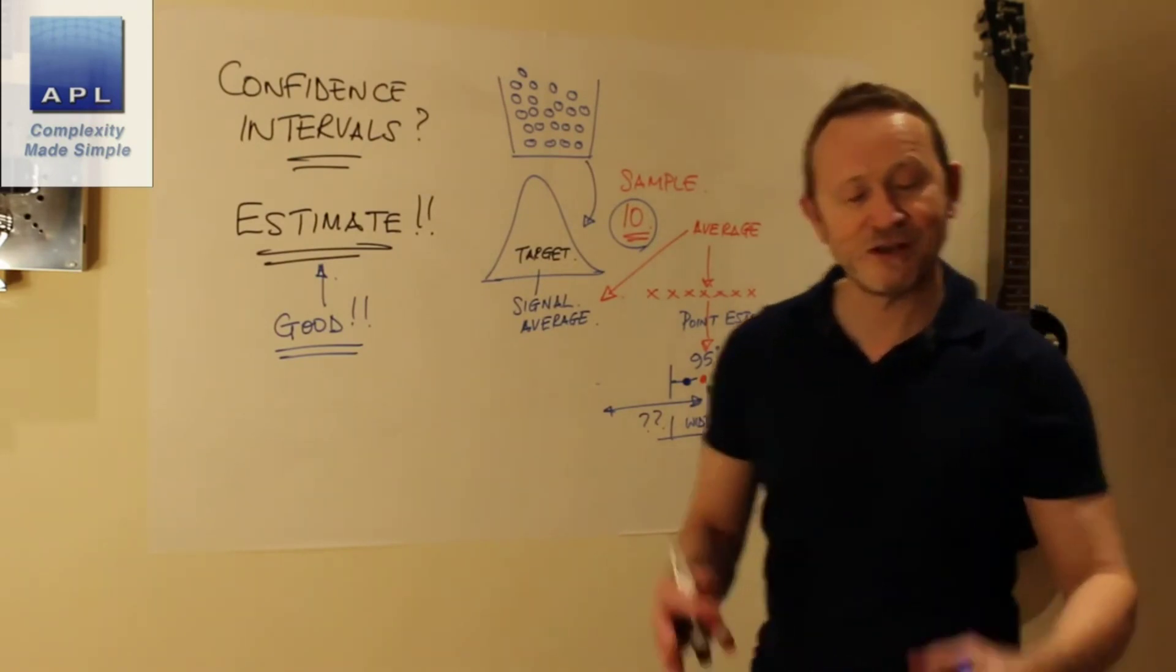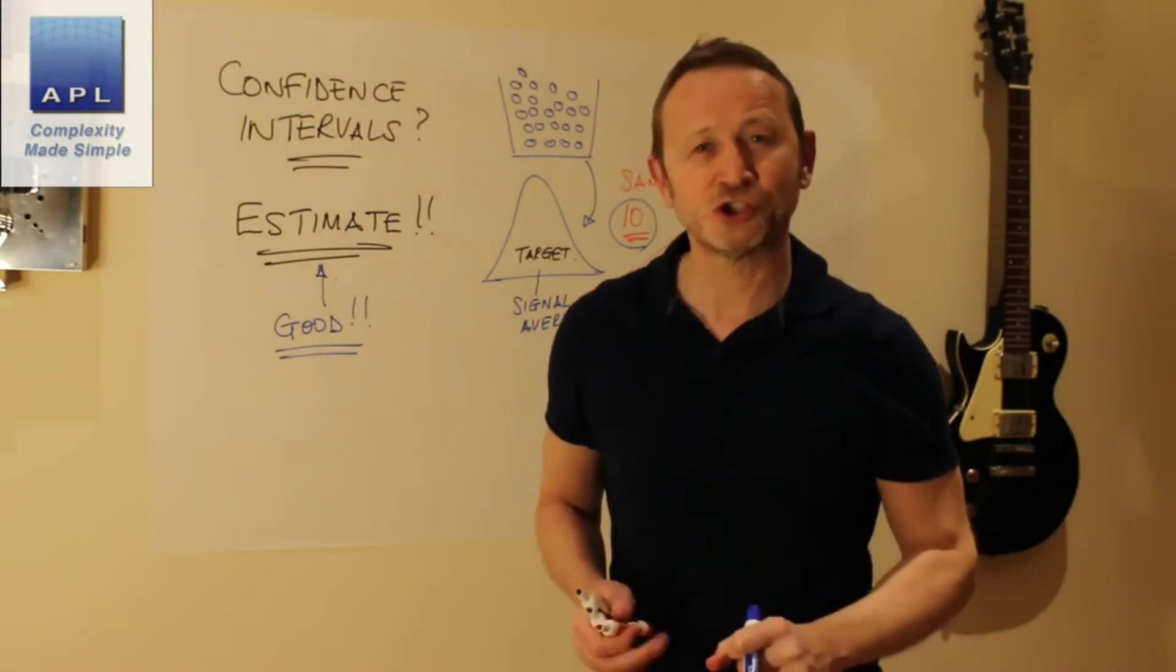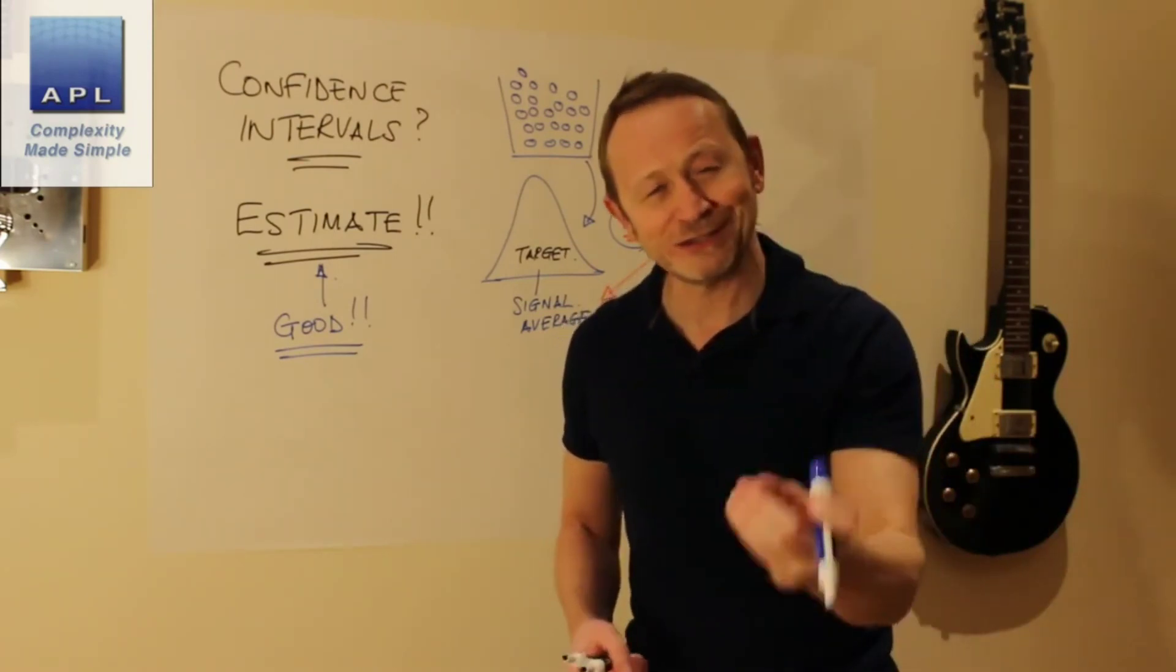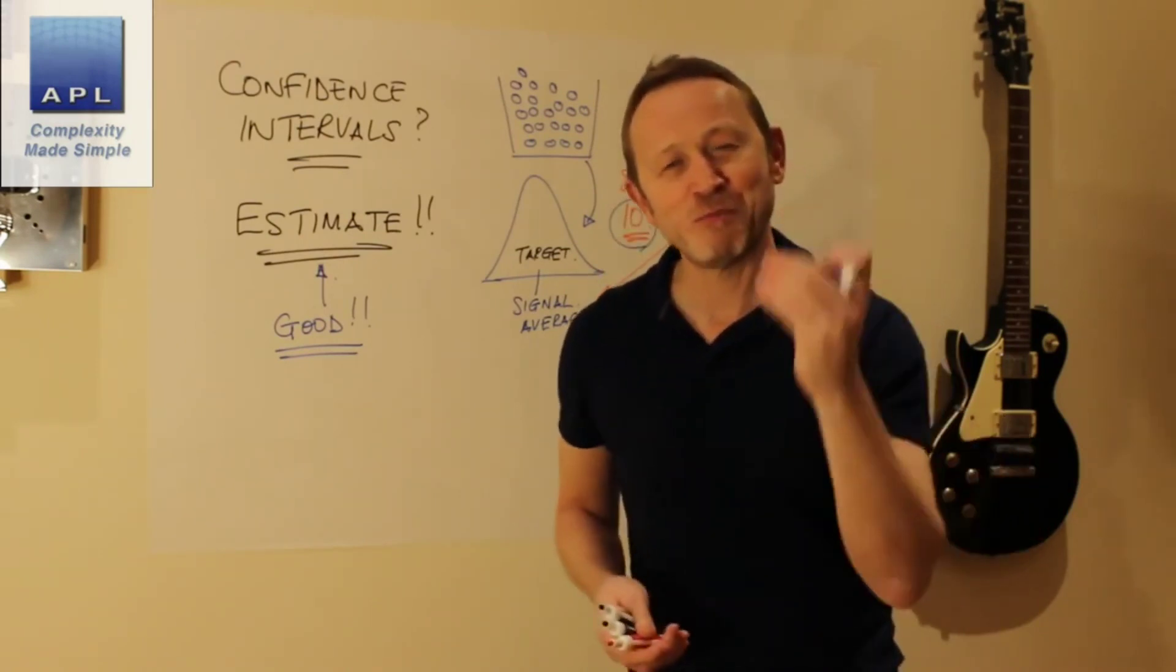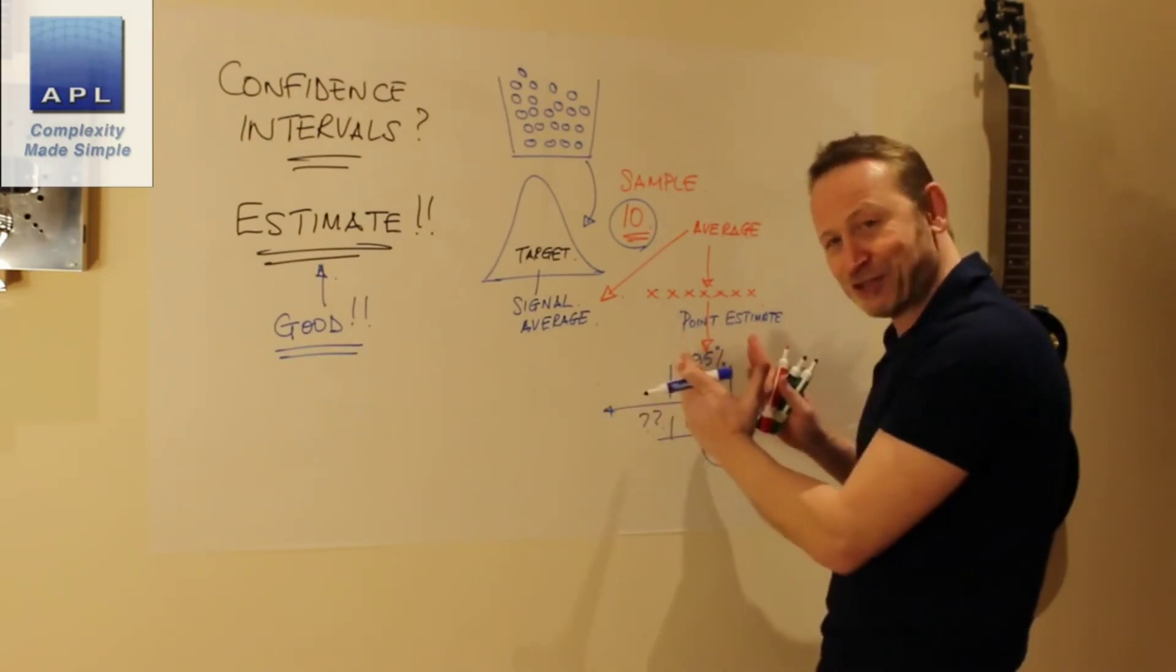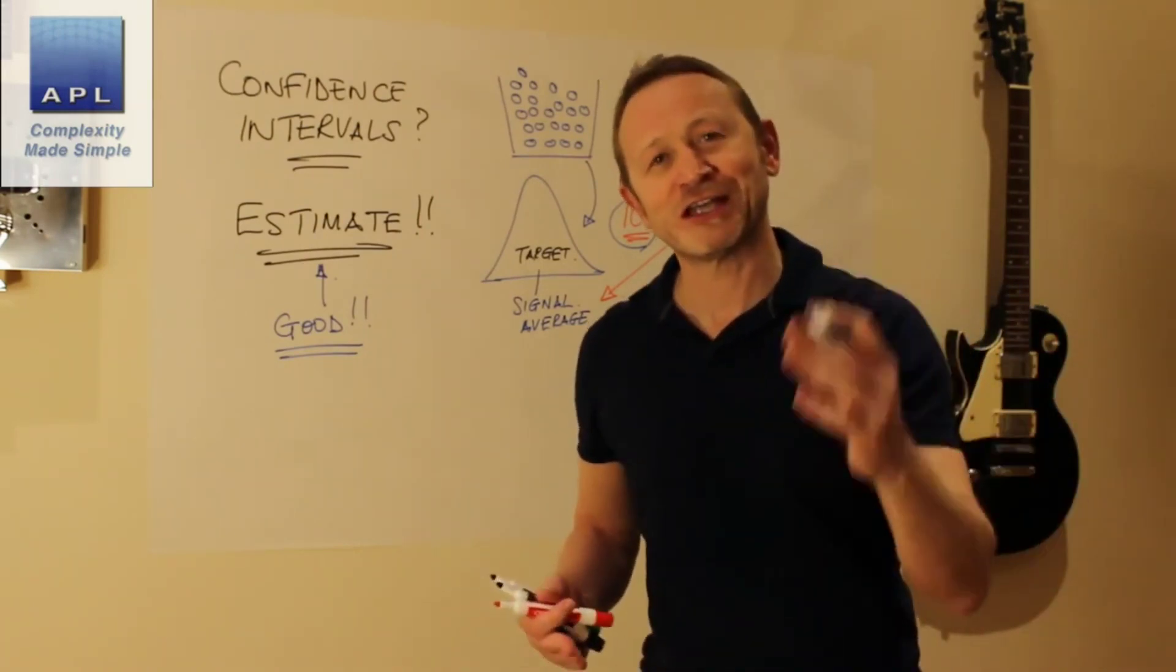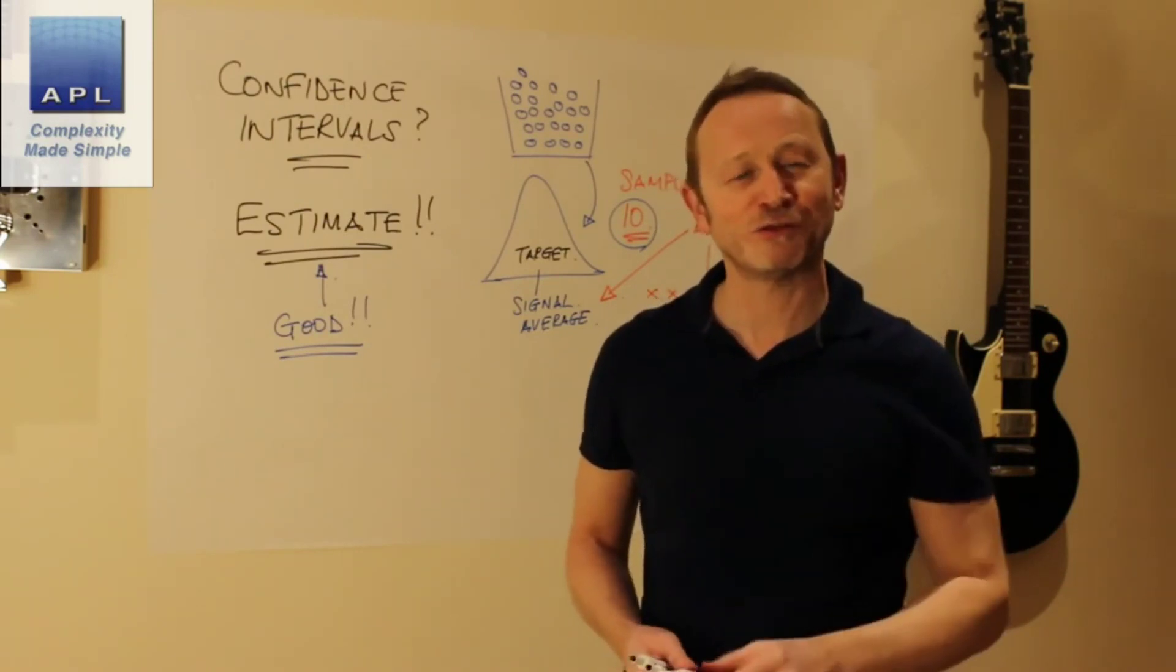And that's really how confidence intervals should be used. They shouldn't be used after the fact to tell you that you've been an idiot and you didn't collect enough data. What they should be used to do is to be more intelligent and say, hang on, I want a great estimate of what's going on here. Therefore, I'll specify the confidence interval I would like and I'll calculate an intelligent, accurate, and useful estimate.